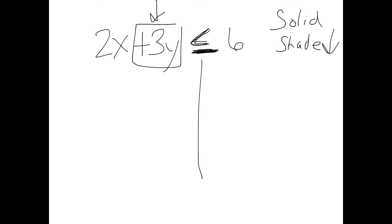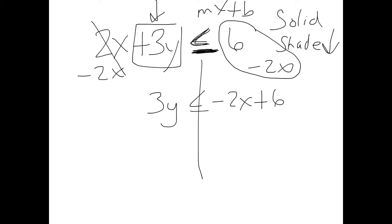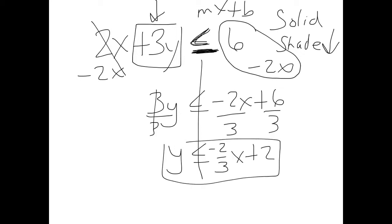I already know this is a solid line and shade down, so on a STAR question I'm already eliminating responses that don't have solid lines and shade down. Then we solve: subtract 2x from both sides. In my class we don't line up the 6 and the -2x because they're not like terms. This becomes 3y ≤ -2x + 6. I like to write it in mx + b form, so I put the -2x part first and 6 second. Then divide everything by 3: y ≤ -2/3 x + 2.